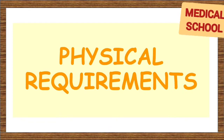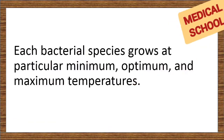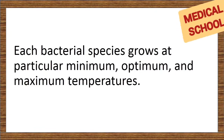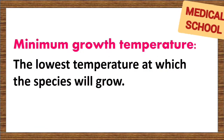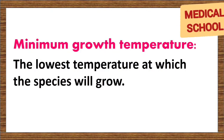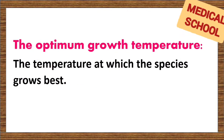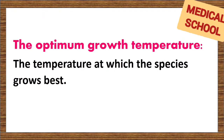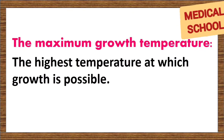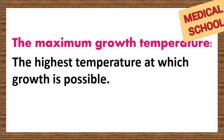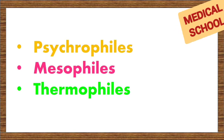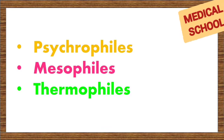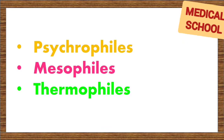The first physical parameter is temperature. Each bacterial species grows at a particular minimum, optimum, and maximum temperature. The minimum growth temperature is the lowest temperature at which the species will grow. The optimum growth temperature is the temperature at which the species grows best — growth rate is fastest at this temperature. The maximum growth temperature is the highest temperature at which growth is possible. Microorganisms are classified into three primary groups based on preferred temperature range: psychrophiles, mesophiles, and thermophiles.